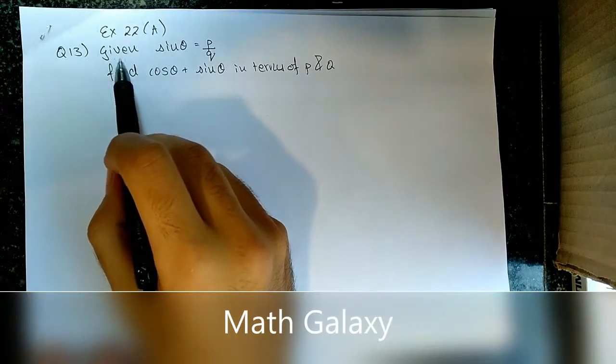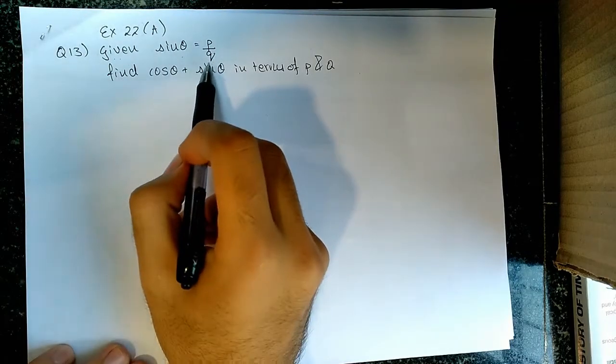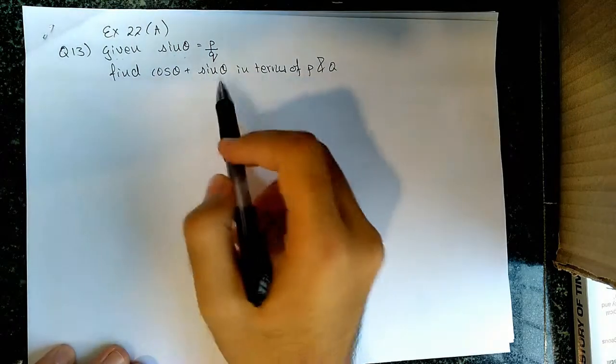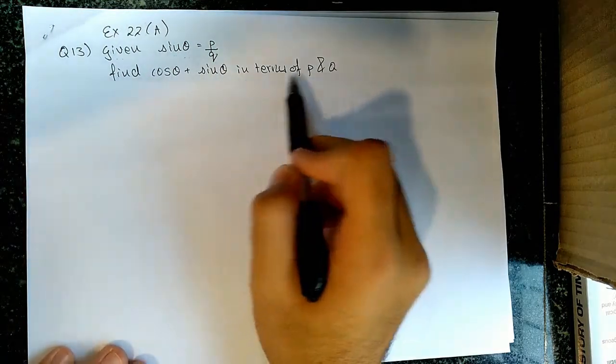The question is, they have given us sin theta equal to p upon q. They have asked us to find cos theta plus sin theta in terms of p and q.